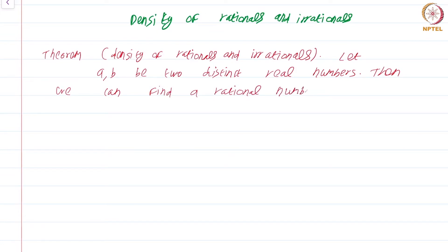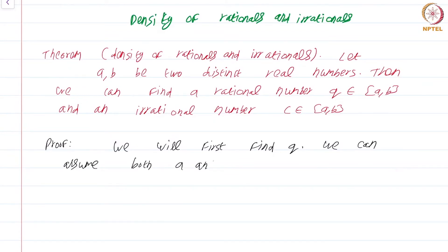Proof. We will first find q. We can assume both a and b are irrational.